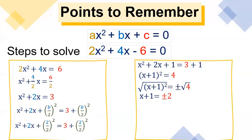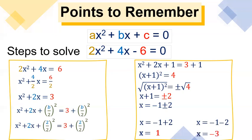We have now x plus 1 is equal to plus or minus 2. Then x is equal to negative 1 plus or minus 2. Let's get the roots: x is equal to negative 1 plus 2 and x is equal to negative 1 minus 2. Adding negative 1 and positive 2 gives x equals 1, and adding negative 1 and negative 2 gives x equals negative 3.